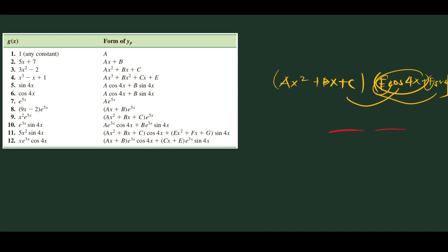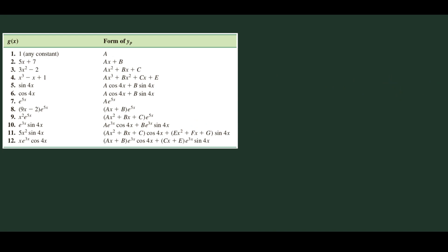For our last example, we have x times e raised to 3x times cosine 4x. The form is (ax plus b) times e raised to 3x times (cosine 4x plus sine 4x). That covers all 12 examples. I hope you now have a better insight on how to create an appropriate guess for a given g of x. We'll do more examples in the next videos.